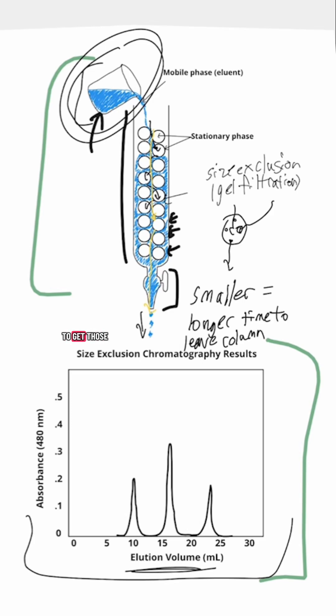In order to get those molecules untrapped, we are going to have to pour more of that mobile phase through the column, so more of the solvent. And we keep pouring that in until eventually all of the molecules that we're interested in will exit the column.